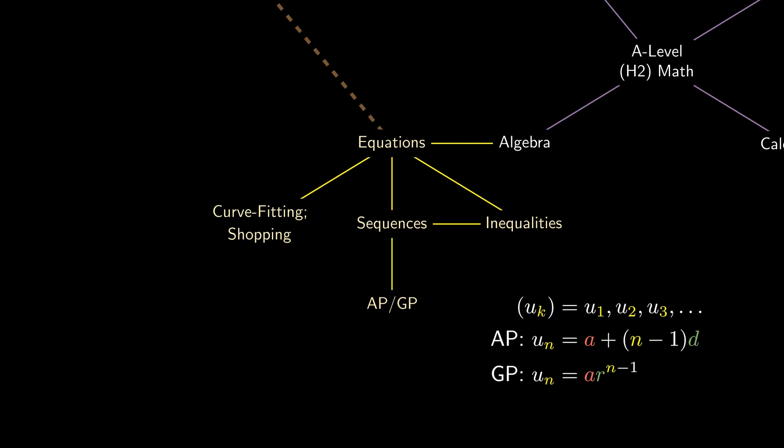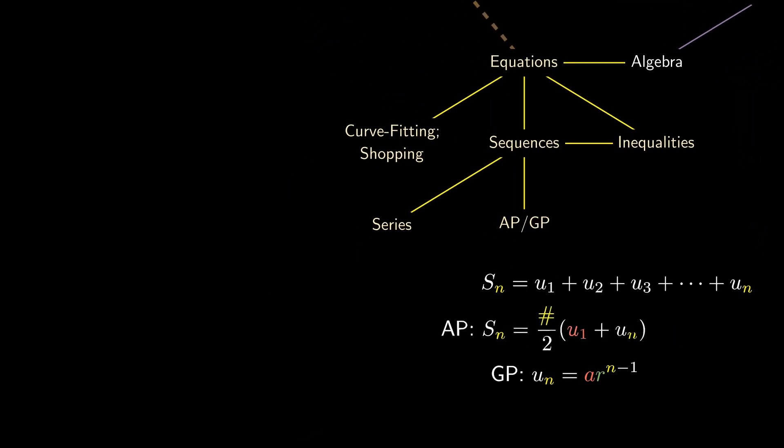A natural follow-up question is to find the sum of the first n terms of the sequence. We call this idea a series, and the arithmetic series is given by the number of terms over two times the first plus the last, while the geometric series is given by the first term times 1 minus R to the number of terms, all over 1 minus R.